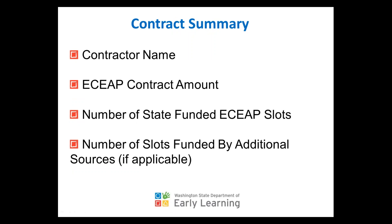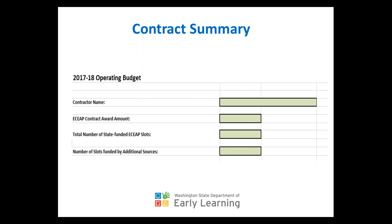Now we're going to take a look at a few sections we've added to the template, starting with the contract summary, which will look pretty familiar as it's pretty similar from last year. The one addition is that the number of slots added by additional funding sources is included in this section, so if you have additional funding to provide additional slots, we'd like you to document it there. It pretty much stayed the same from last year.